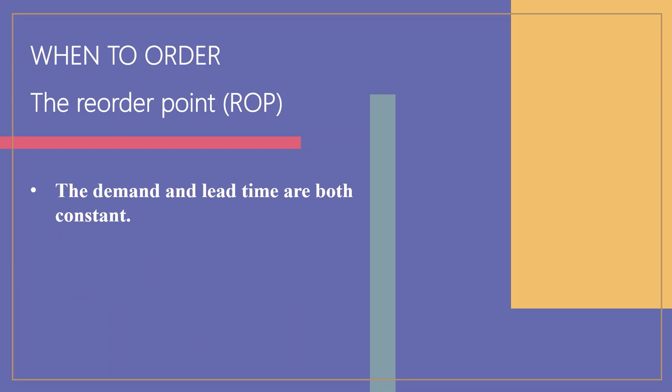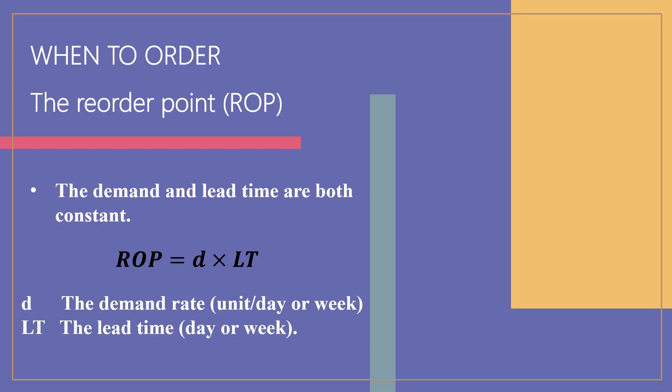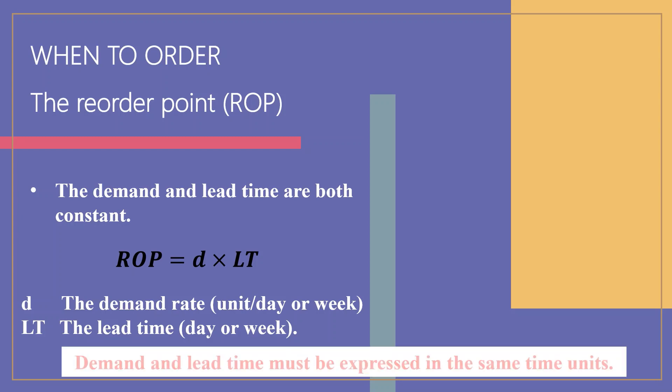In the first situation, the reorder point is simply: ROP equals D multiplied by LT, where D is the demand rate in units per day or week, and LT is the lead time in days or weeks. Note that demand and lead time must be expressed in the same time units.